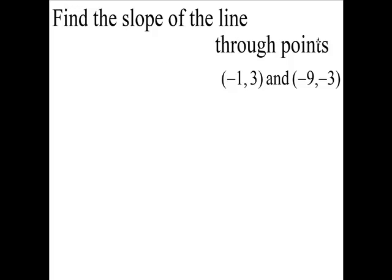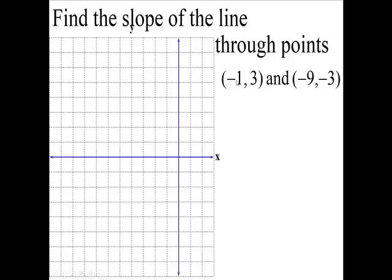Find the slope of the line through these points. We need some graph paper, and where is the point negative 1, 3?